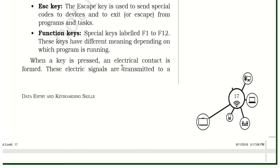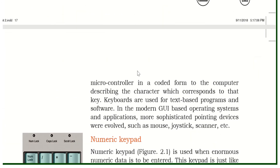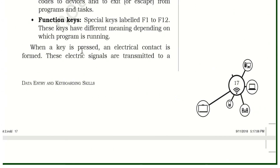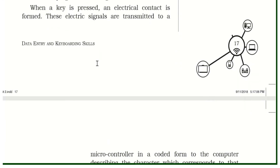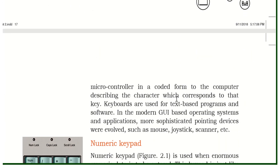When a key is pressed, an electrical contact is formed. These electrical signals are transmitted to a microcontroller. When we press the key, the electrical signal comes out and these electrical signals are coded by the microcontroller for the computer.